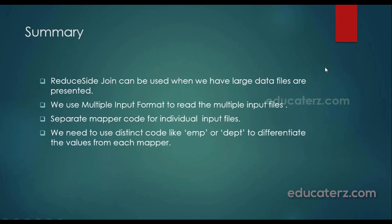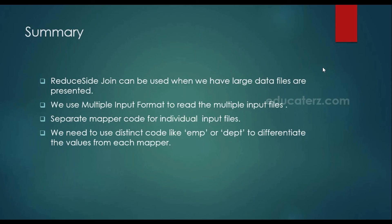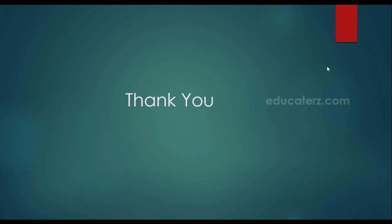In summary, in this module we have been discussing about the reducer side joins, which we use whenever we have larger datasets. With the help of the multiple input format, we can read multiple input files and process them. For that, we have two different mappers — the employee mapper and the department mapper. With the help of the unique codes EMP and DEPT in the mapper code, we identify our employees and departments, and finally we write our reducer class to find out the summation. Thank you, and let's catch up in the next module.